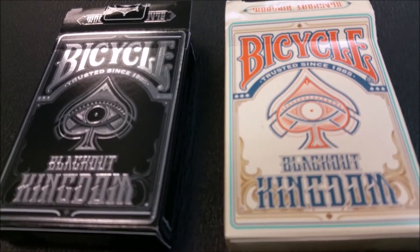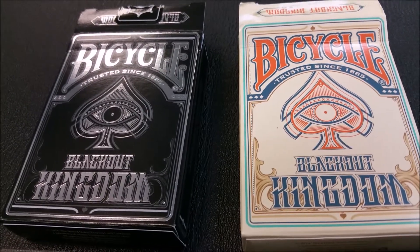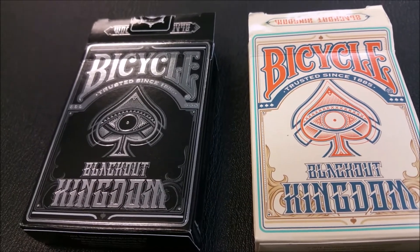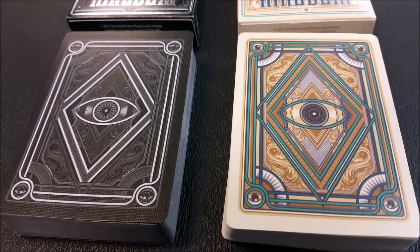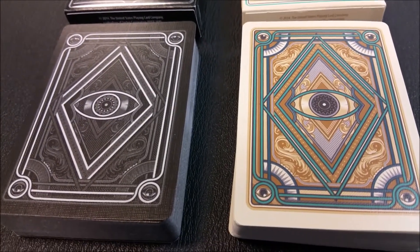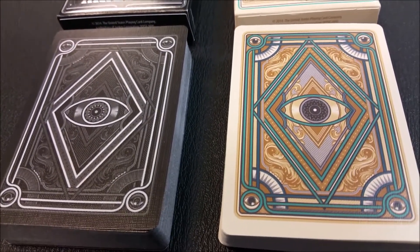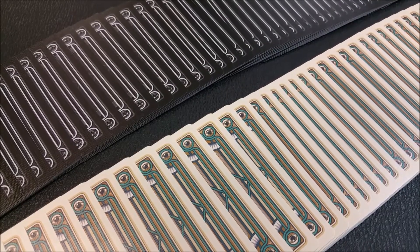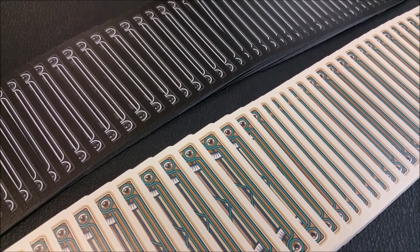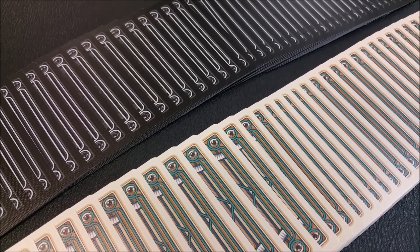Here are the two tuck cases side by side. You have the normal Blackout on the left and the light shade edition on the right. Here are the back designs for the two. You can see the Blackout Edition is devoid of color, but the light shade edition is accented with turquoise and gold. Side by side, here's how the Blackout Edition and the light shade edition both look in a spread.